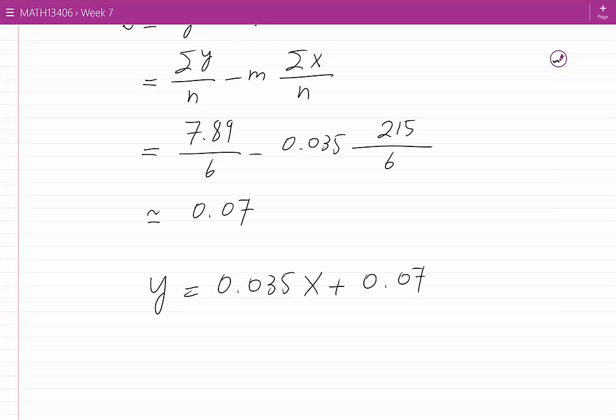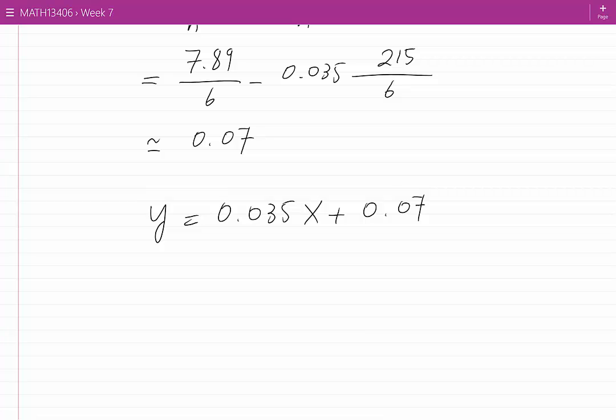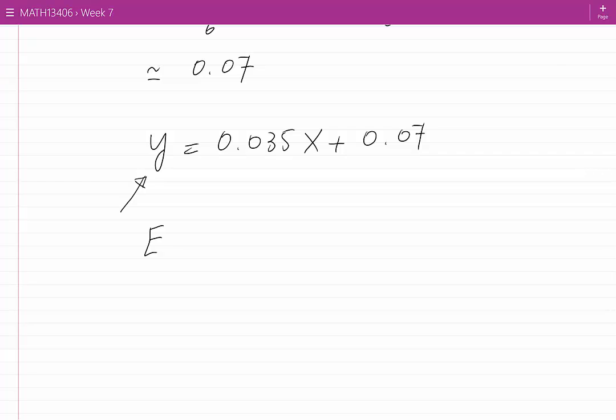Now, in order to better understand what this equation really is, we remember that y somehow represents the amount of error generated in the machine because of the time that the machine has operated. I am going to show, instead of y, E to represent the error. And the unit of error, in this case, would be millimeters. This is equal to 0.035 times x. And x represents the number of hours that the machine has operated. Therefore, I write, instead of x, t plus 0.07. And according to our data, t is given in hours.